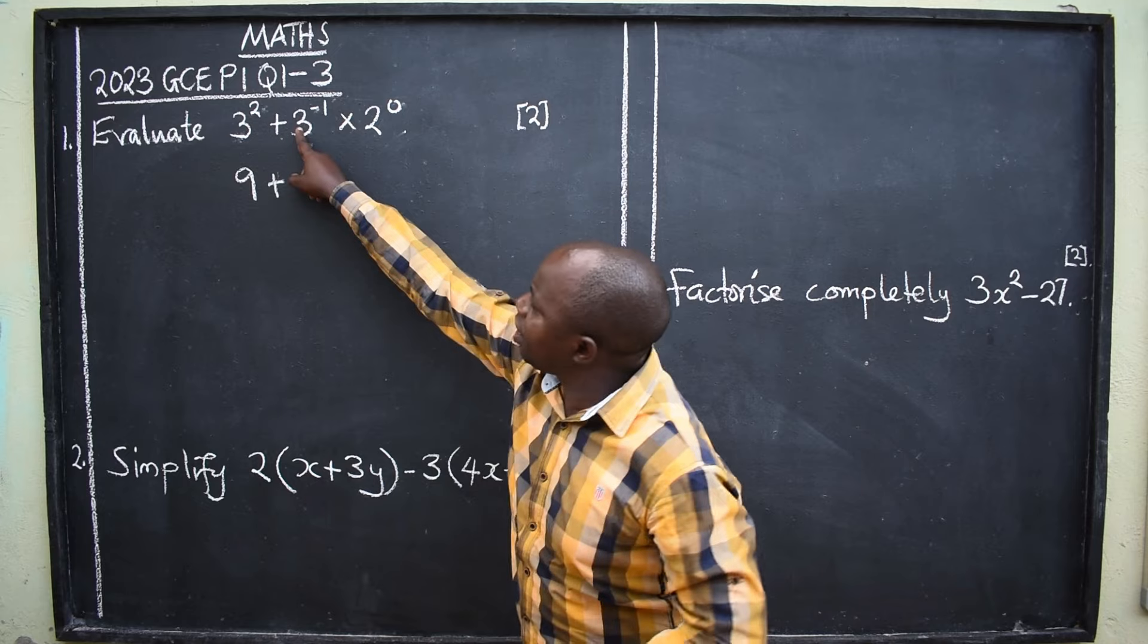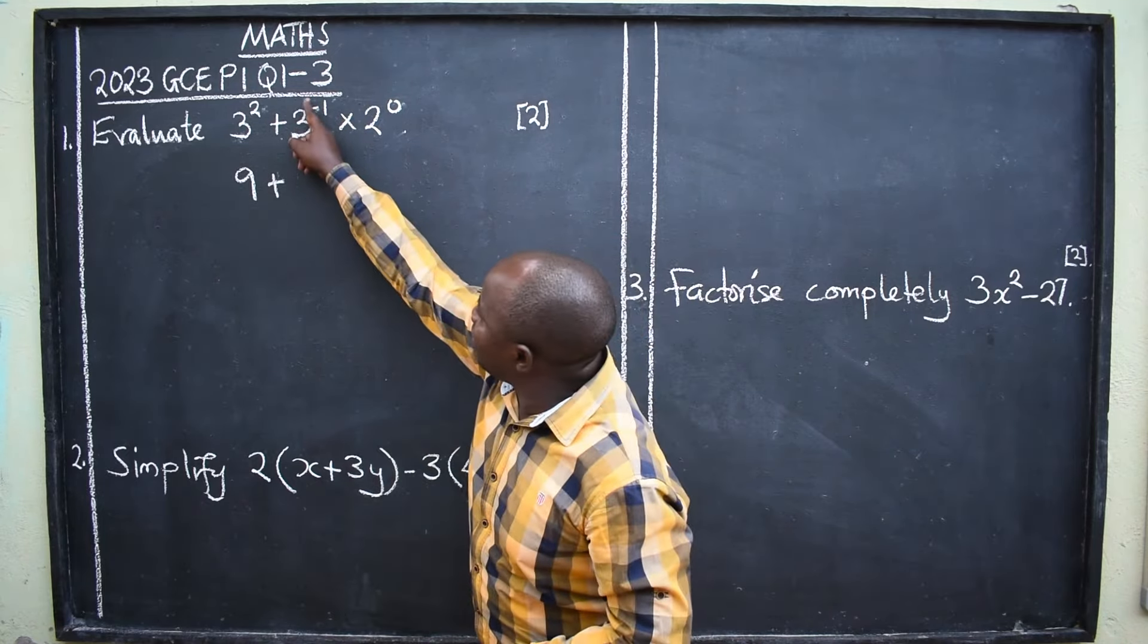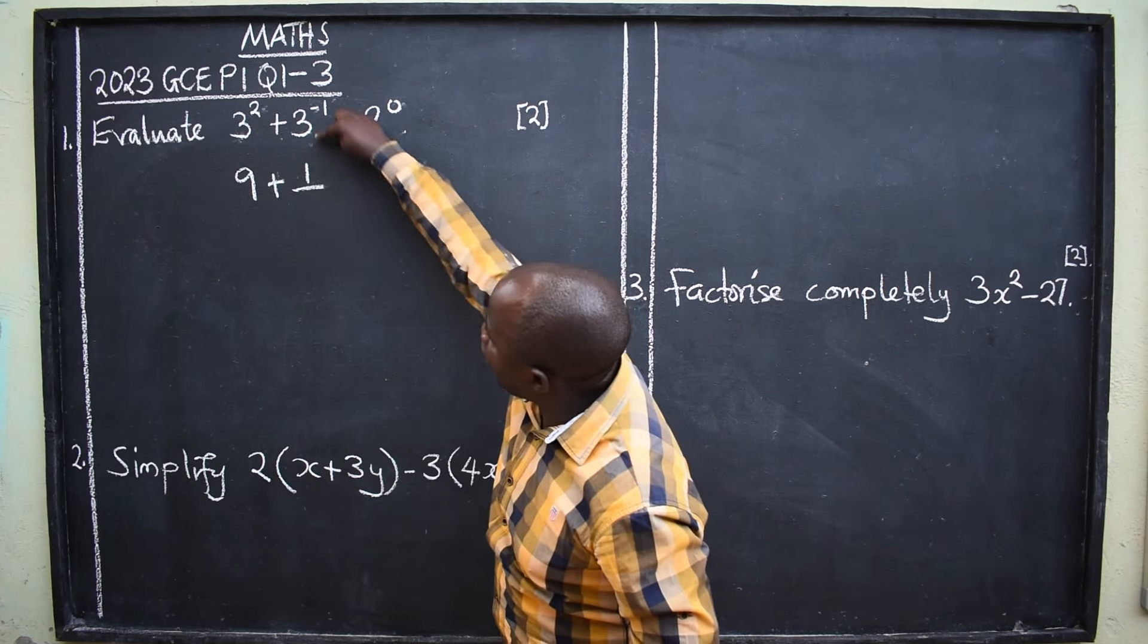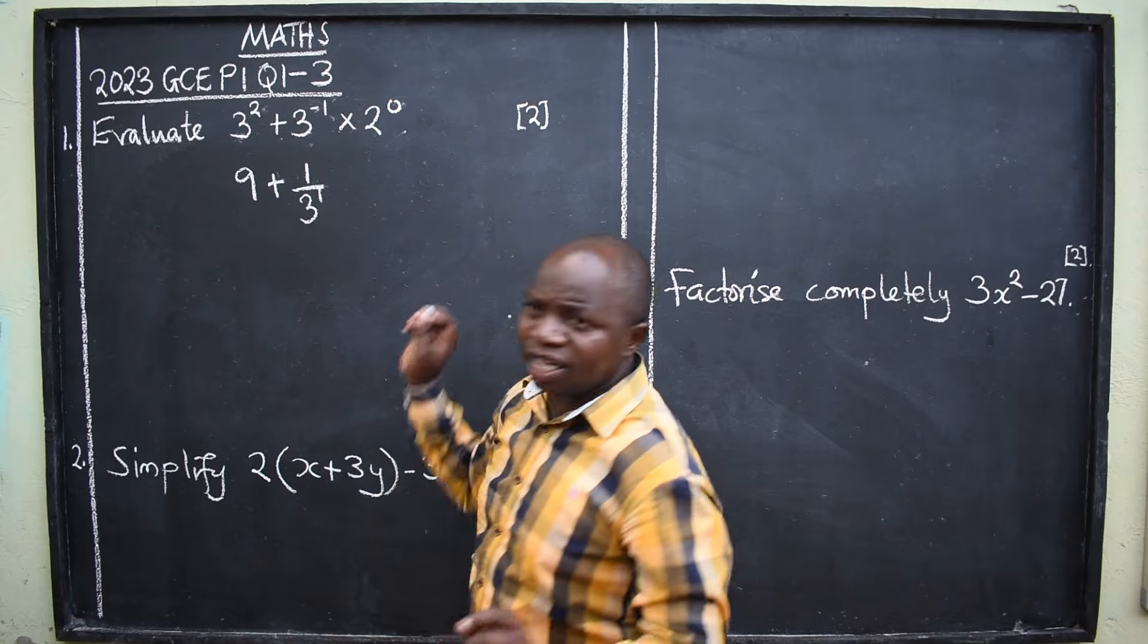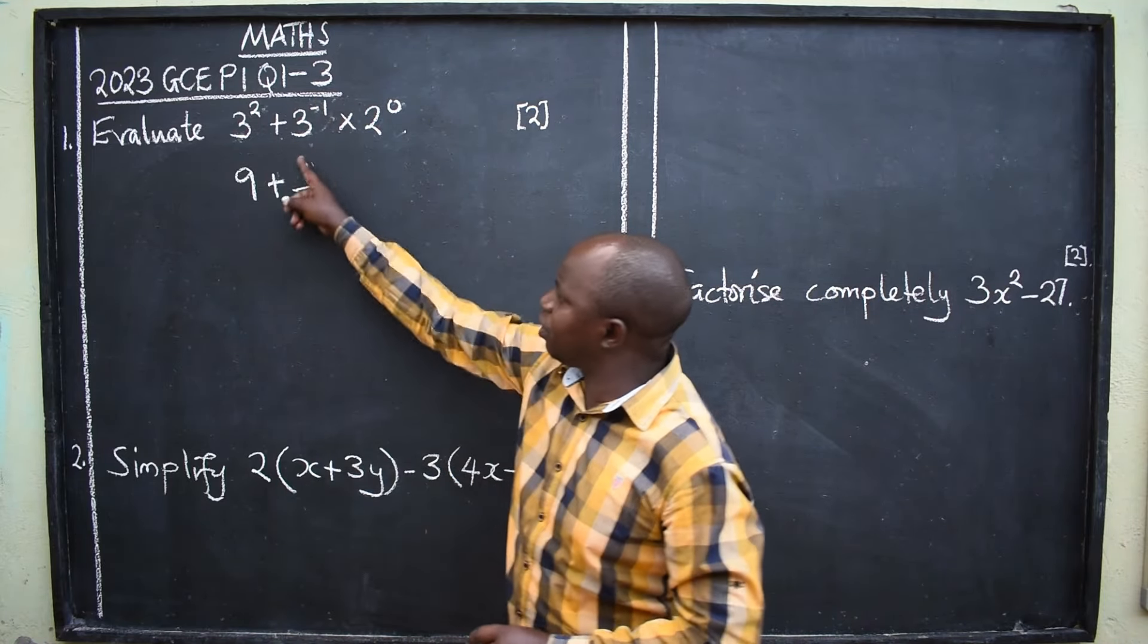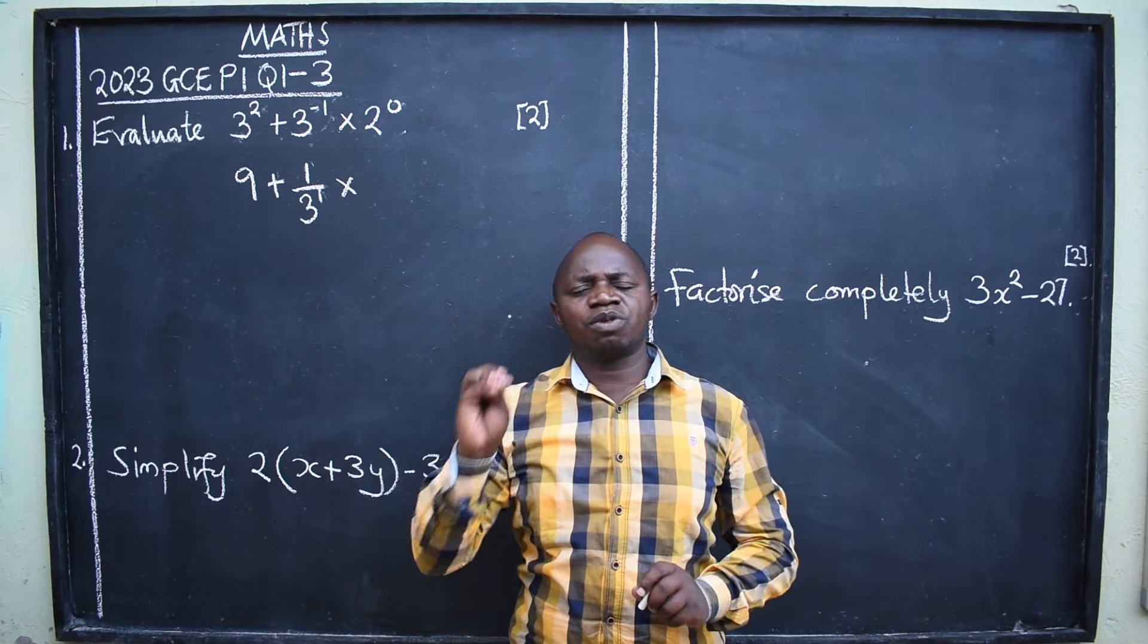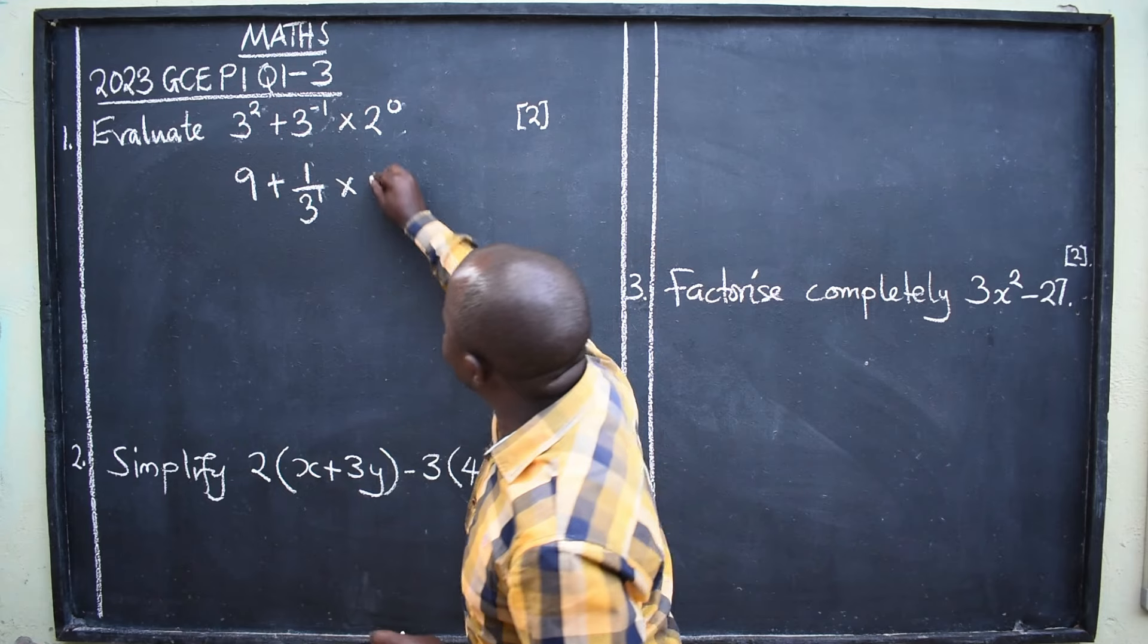Here we have three to the power negative one. We have a negative power. Just a negative here. In indices it means one over. Just the negative. You remove the negative here. It is one over. What are you going to remain with? A three here. And a one. The negative has gone. Where? One over. So we have changed from this format to this. Times two to the power zero. In indices it says any number or variable raised to the power zero, the answer will always be one. So here it is a one.